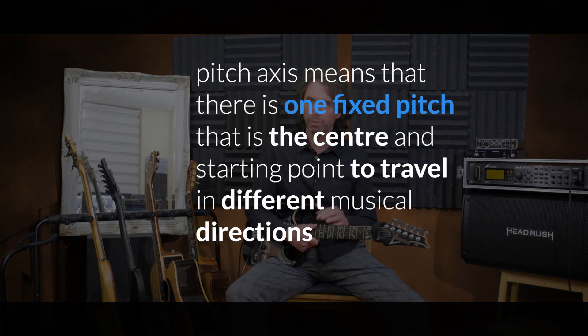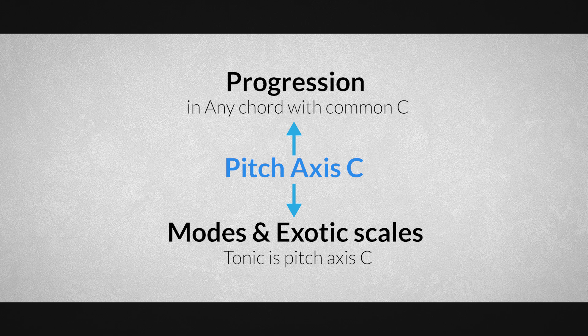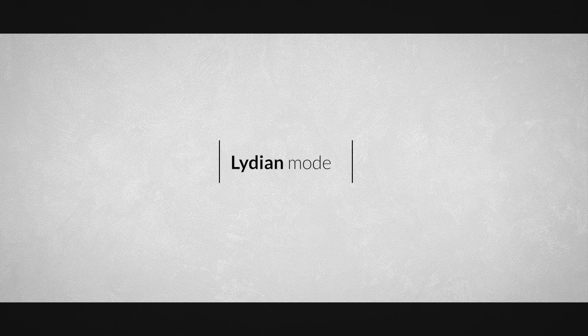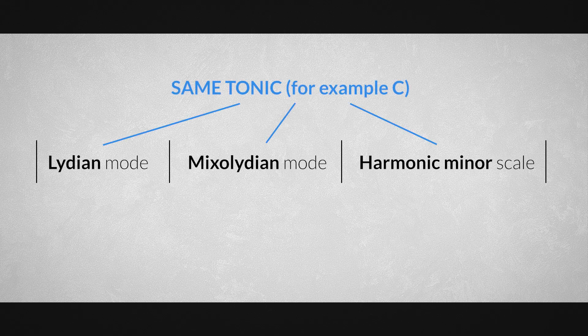The word axis tells us that there is one central point that controls the turning of the musical wheel. It's a fixed position, but by turning the wheel it leads us to different choices within the limitations of this fixed point. So cutting to the chase, pitch axis means there is one fixed pitch that is the center and starting point to travel in different musical directions — in a progression that evolves around one note, or traveling to the modes and exotic scales all pointing to one tonic. You can play the Lydian mode, the Mixolydian mode, and the harmonic minor scale all in one section of composition, as long as the root of those modes and scales is one and the same note — that note will be our pitch axis.